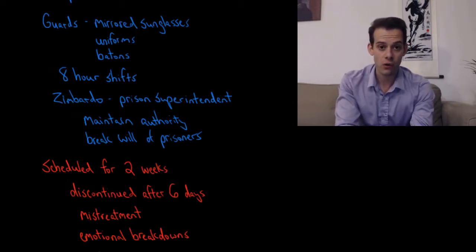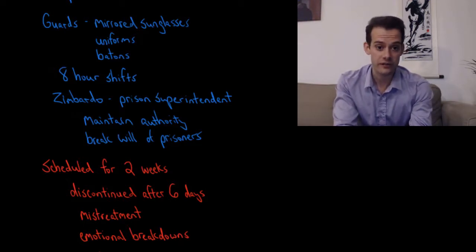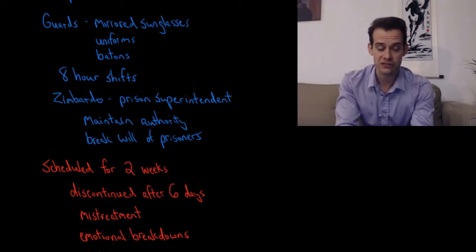Now Zimbardo played the role of the prison superintendent and at the beginning of the study he met with all of the guards and told them that their job was to break the will of the prisoners, to make them obedient, and to maintain authority over the prison. And that they could do this in any way they saw fit, provided they avoided any physical violence against the prisoners.